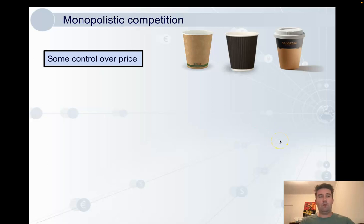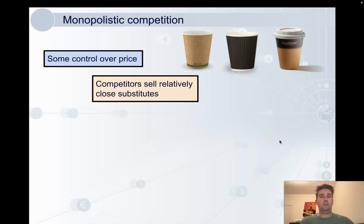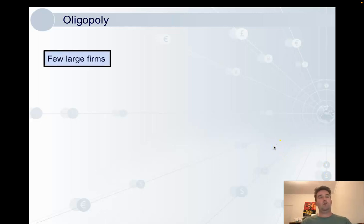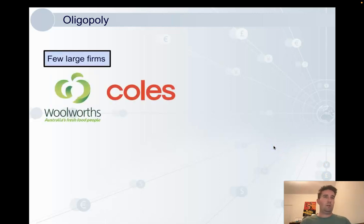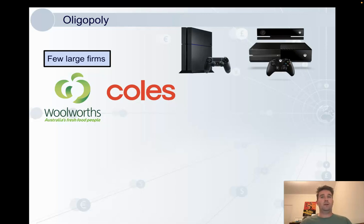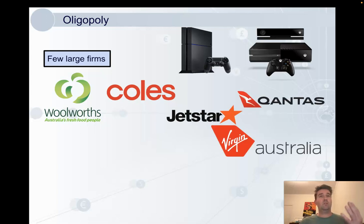And lastly, we're going to look at oligopolies. Oligopolies are characterized by having a few large dominant firms. Think of the supermarket industry in Australia — Coles and Woolworths are by far the biggest, and then there are smaller ones like Aldi. Gaming consoles, phones, domestic airlines — just a small number of very large firms.